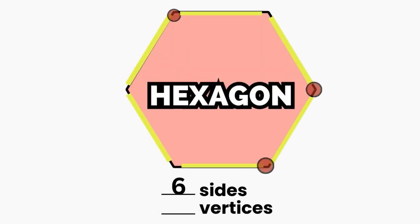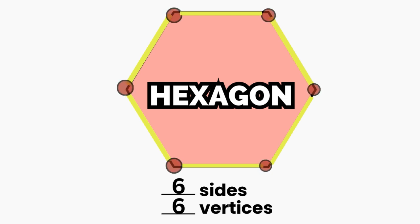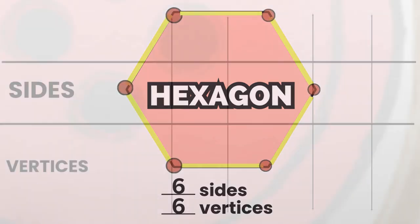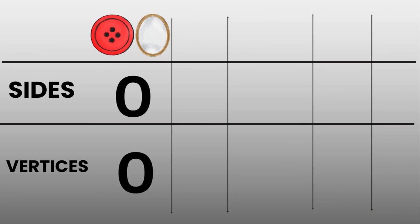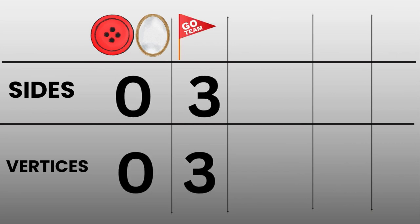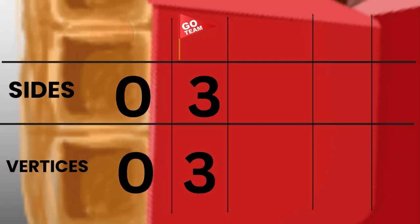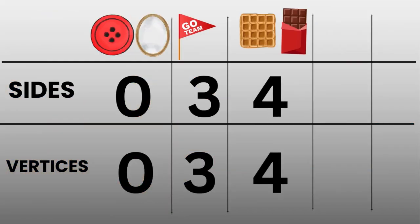A hexagon, it's easy to fix. Just count the sides, you'll find six. Shapes are here, now you know. Count their sides wherever you go.